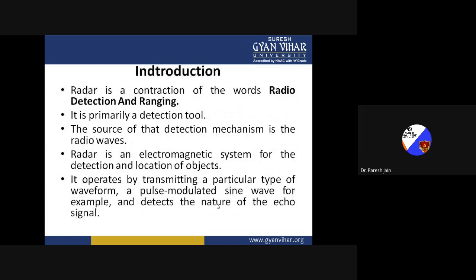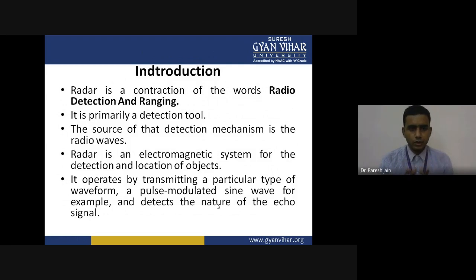Introduction: RADAR stands for Radio Detection And Ranging. It is the device or system used for detection and ranging, and it is the primary detection tool which detects a target or object. The source of that detection mechanism is radio waves. Radar is an electromagnetic system for the detection and location of objects. It operates by transmitting a particular type of waveform — a pulse-modulated sine wave, for example — and detects the nature of the echo signal.